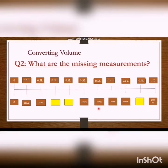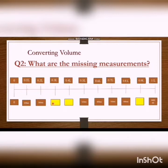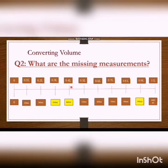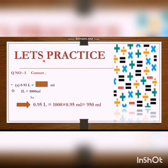When we convert 0.6 liters into ml, we multiply by 1000 and we get 600 ml. When we convert 0.2 liters into ml, we multiply by 1000 and we get 100 ml. The answers are 300 ml, 400 ml, and 900 ml.